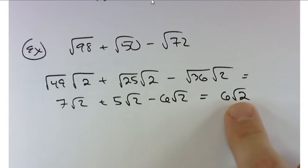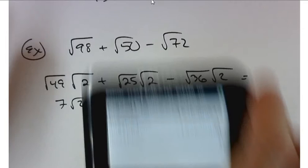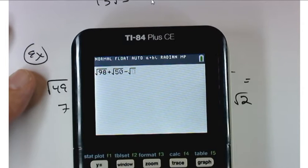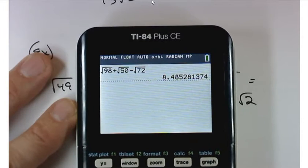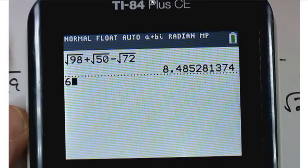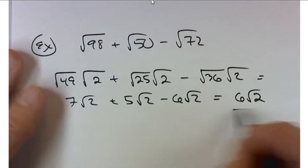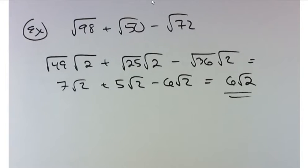Now this is the answer that I'm going to want on an exam: 6 square roots of 2. But you can confirm that you got the right answer - you can compare the square root of 98 plus the square root of 50 minus the square root of 72 to 6 times the square root of 2 and they look pretty identical. So it's a good way to double check your work. This is the answer I'll be looking for though, that's the exact answer. I'm not looking for a decimal answer. You can use the decimal answer to check yourself.